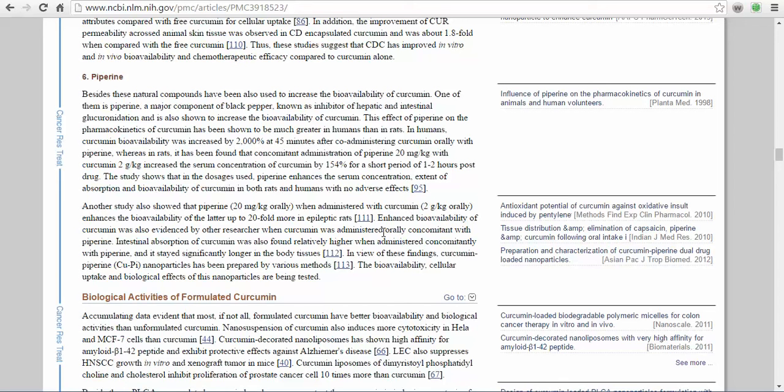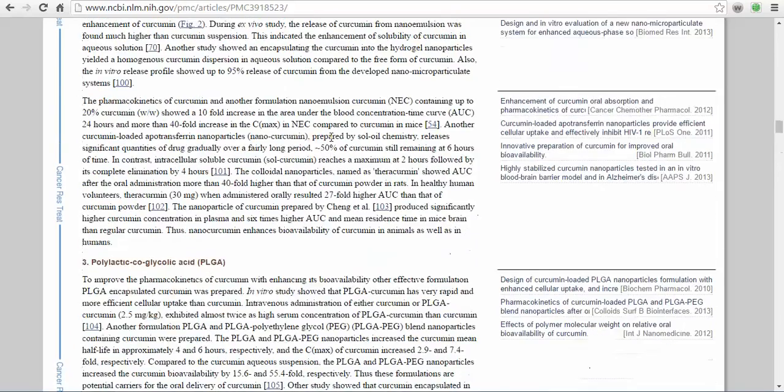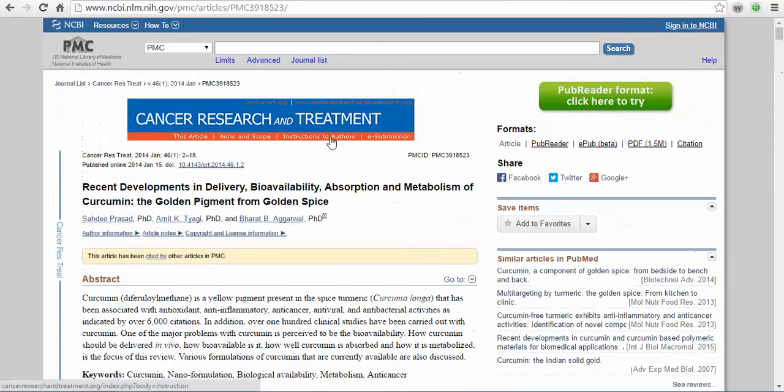It has been found that concomitant administration of piperine, 20 milligrams with curcumin, increased the serum concentration of curcumin by 154 percent for a short period of one to two hours. This study shows that in the dosages used, piperine enhances the serum concentration, extent of absorption, and bioavailability of curcumin in both rats and humans with no adverse side effects. Again, you can go to the US NIH, you can pull up all these studies, you can find all these links. Easiest way is just to go to Google.